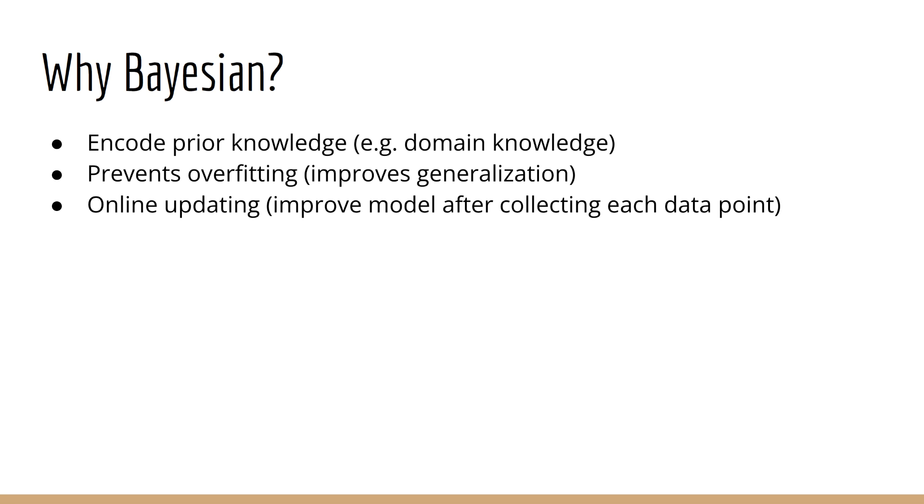One thing I didn't mention earlier is that, because we have a distribution over the model parameters W, when we make a prediction, we don't have just one value of W to consider. Instead, our model prediction is based on infinitely many values of W, of course weighted by their probabilities.